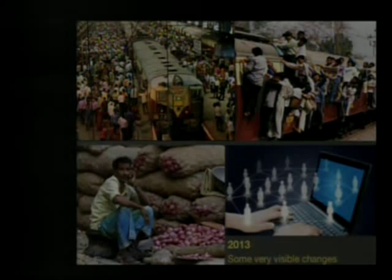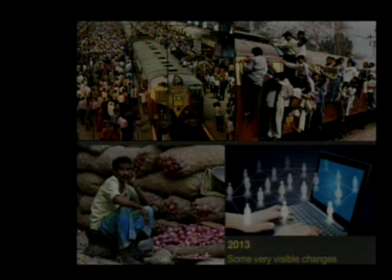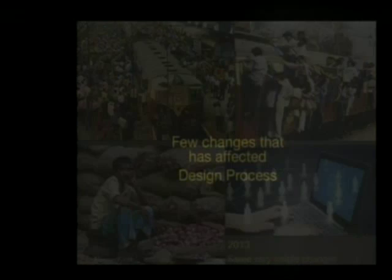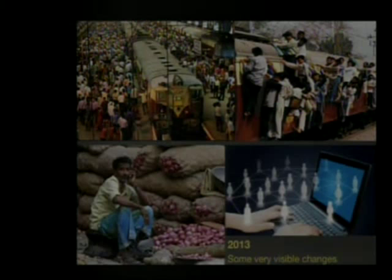There are some visible changes too. For instance, nobody envisaged in 1958 that cities will grow to the extent that they have grown now. You can see the kind of problem that Bombay is facing and sooner or later other cities will also face. Nobody expected mobile to be that popular and so powerful. Nobody expected internet to be so important and create communities which are virtual. What I am going to do is talk about a very small part of it — the changes that have affected the design process. That is the focus of the talk here.